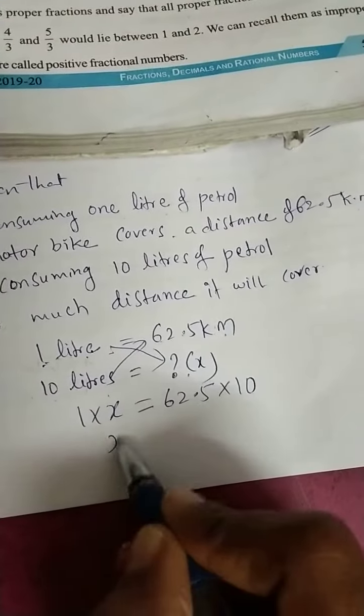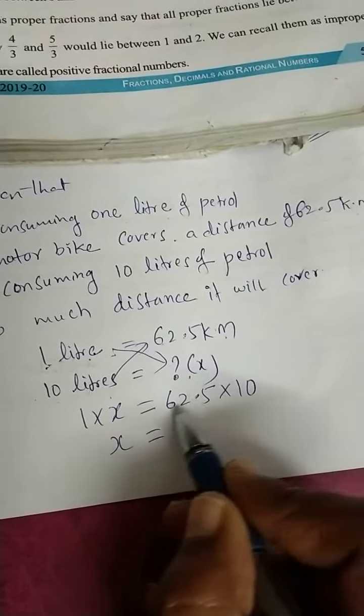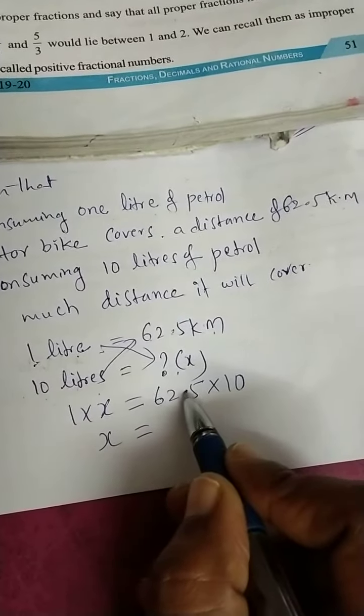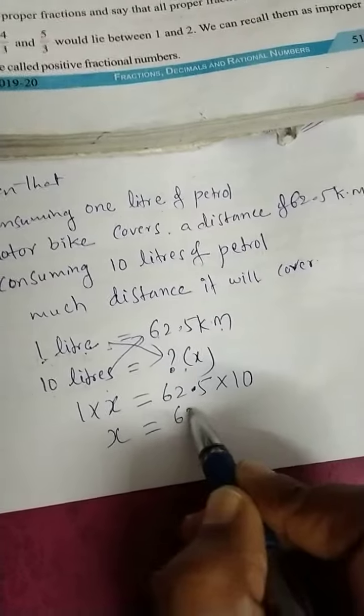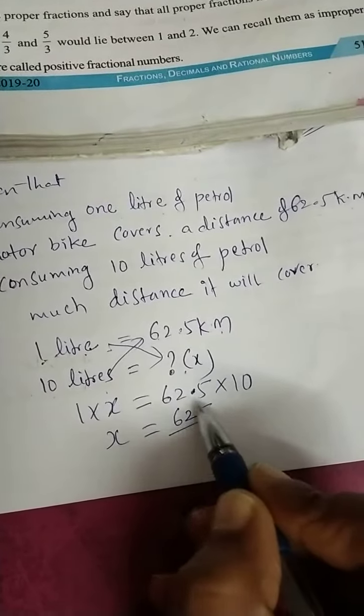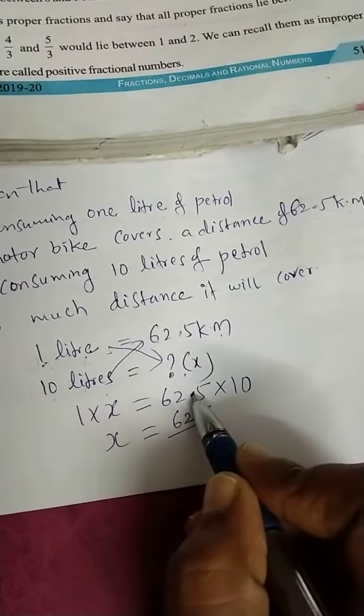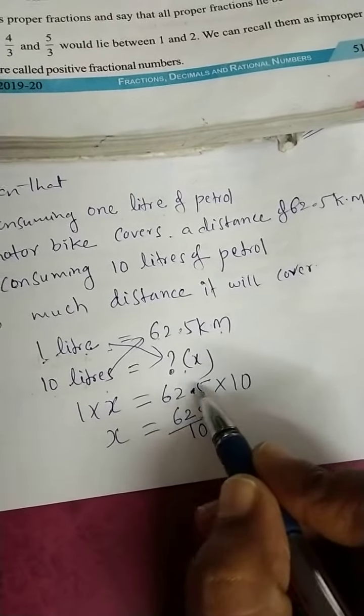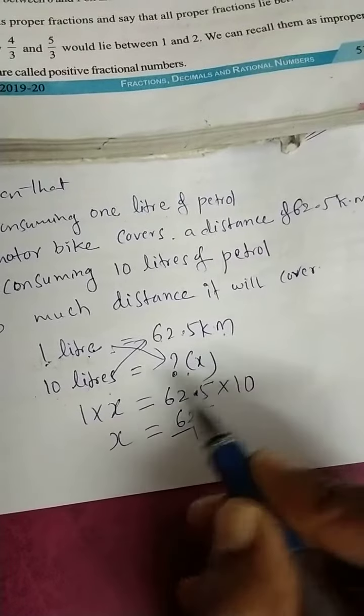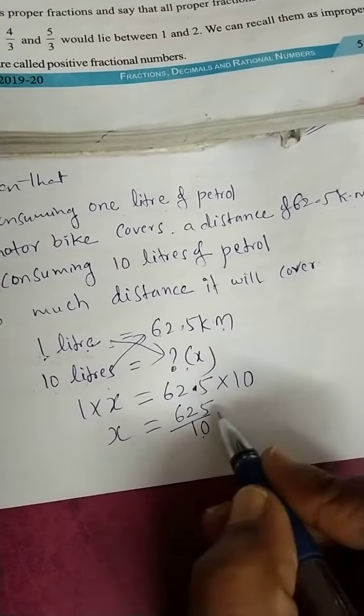Now 1 into x... 62... First you should write, you should remove the decimal point and write 625 by... How many digits after decimal point is there? 1 digit after, so down we should write 10. If it is 2 digits after means 100, 3 digits after means 1000, like that we can write.